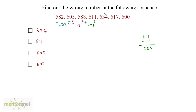So 634 is the wrong number in the sequence — it should be 594. No need to analyze the rest of the series. Our answer is 634, option A.